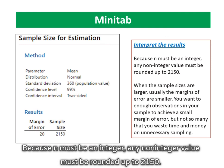Because n must be an integer, any non-integer value must be rounded up to 2150.